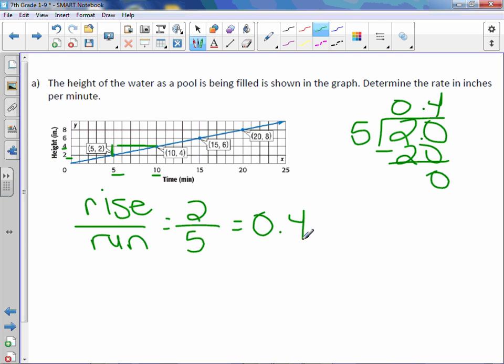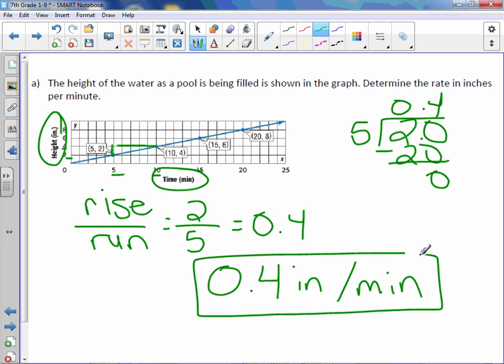We get 0.4. Because it's asking for a rate, we don't want it to stay in fractional form. So our rate is 0.4, our y value is inches per our x value is minute. So y over x, which means the constant of proportionality is also 0.4. And if we were to write this as an equation, we would write it as y equals 0.4x.